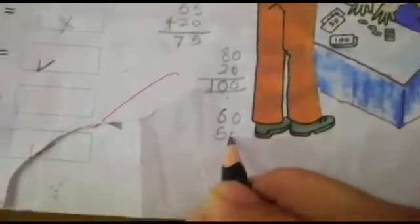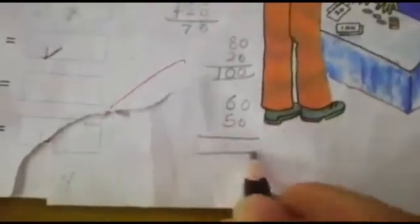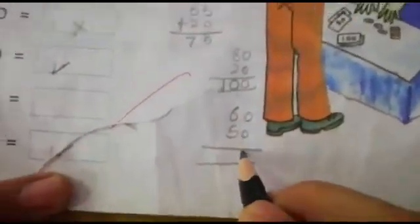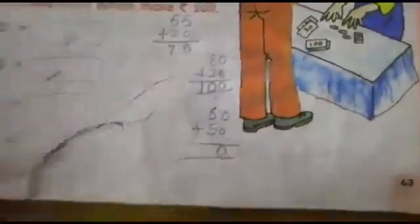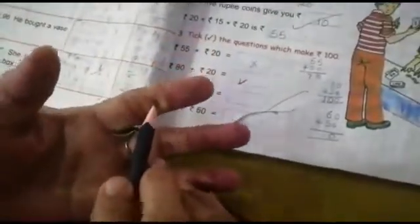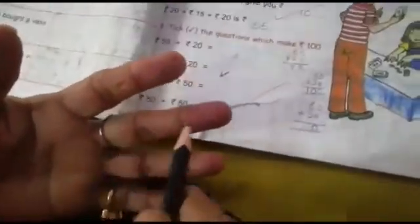Now 60 rupees plus 50 rupees. We add them and count — that gives us 110. Is it 100 rupees? No. We will put a cross. Next: 50 rupees plus 50 rupees. 5 and 5 is 10, so that is 100 rupees. Yes! We will put a tick.